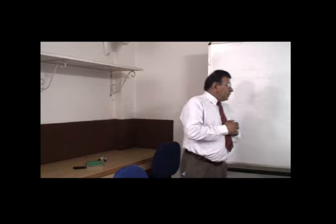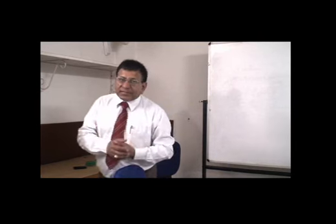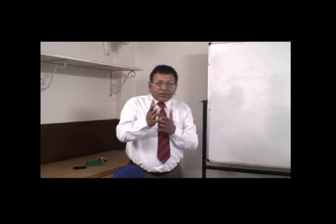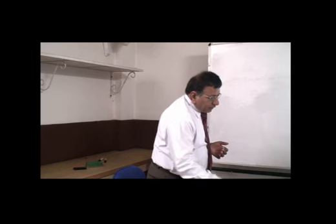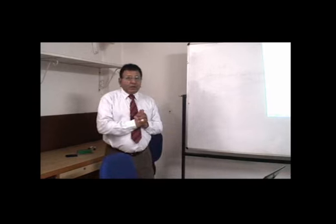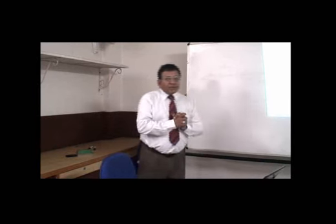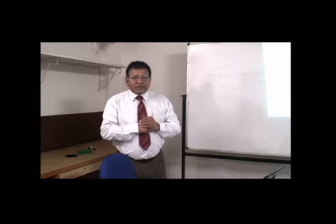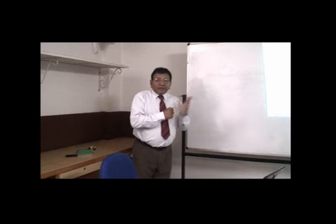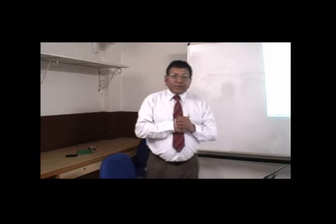For example, if a person has some assets and is transferring them into his business as stock-in-trade, and if any profit arises out of it, then that conversion shall be deemed to be a transfer. Also included is the maturity or redemption of zero coupon bonds, or any transfer which involves allowing possession of immovable property to be taken or retained in part performance of a contract. These are transactions deemed to be included under the word 'transfer', and any capital gain arising from them shall be chargeable under the head capital gain.